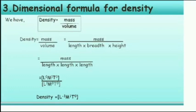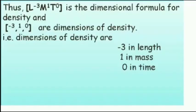The third example is the dimensional formula for density. Density equals mass divided by volume, and volume equals length × breadth × height. So density equals mass divided by L × L × L. Therefore, the dimensional formula for density is [L⁻³, M¹, T⁰]. Dimensions of density are minus 3 in length, 1 in mass, and 0 in time.